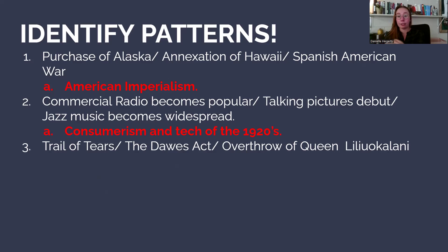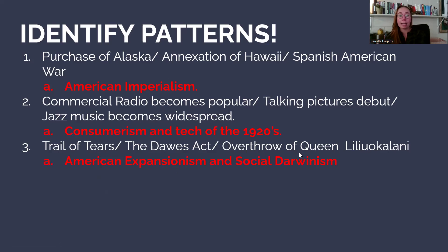The next list is the Trail of Tears, the Dawes Act, and the overthrow of Queen Liliuokalani. The Trail of Tears and the Dawes Act deal with Native Americans, while the overthrow relates to imperialism. The unifying factor here is American expansionism as a whole, along with elements of social Darwinism — the idea that white American culture is superior to the culture of Native Americans or the Hawaiian monarchy.